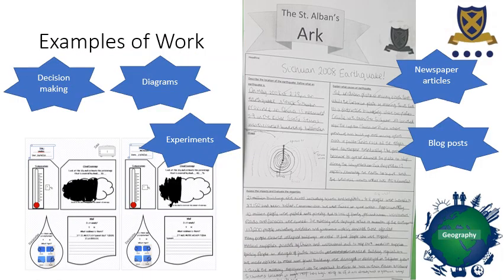Throughout your journey in geography we do lots of different kinds of work. For instance, we do experiments where we get to measure things and talk about why we're seeing what we're seeing. We do decision-making exercises where you're given lots of information and have to decide what you would do in a given situation. We draw diagrams to explain processes, and we also do creative writing — applying what we've learned to things like newspaper articles and blog posts.